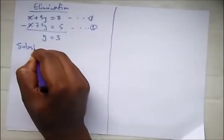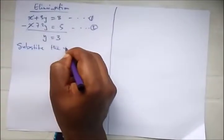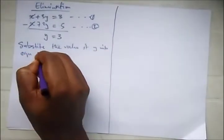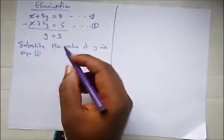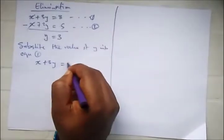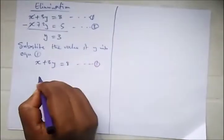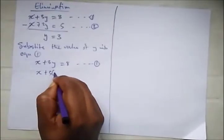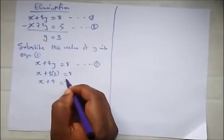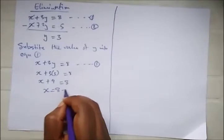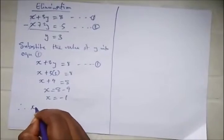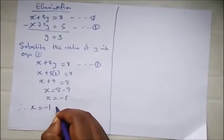So here, what do we do? We just substitute the value of y into equation 1. Here, you can substitute the value of y into any of the equations in elimination method. So we have x + 3y = 8, equation 1. So here, we have x + 3(3) = 8. So this is x + 9 = 8. And here, x would be 8 - 9, and x = -1. You can see our answer is still the same as using substitution method.